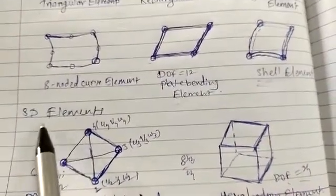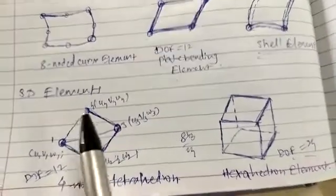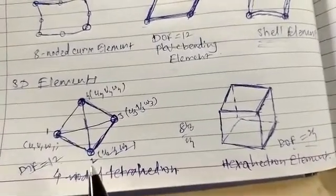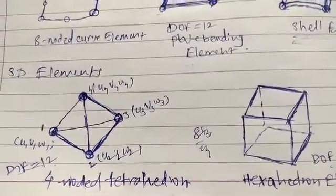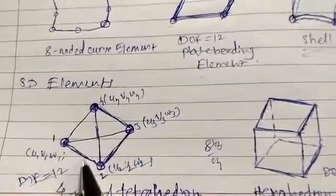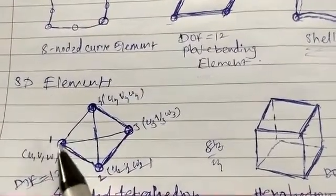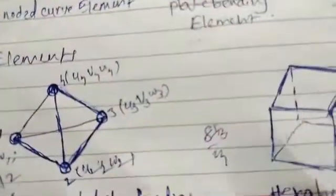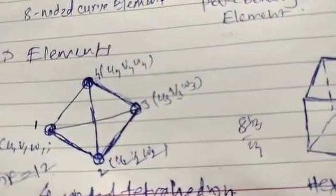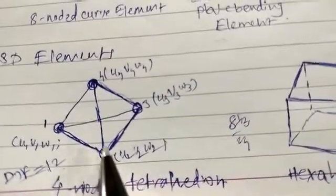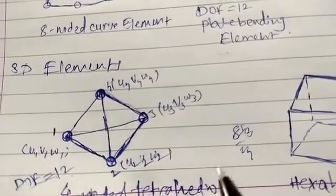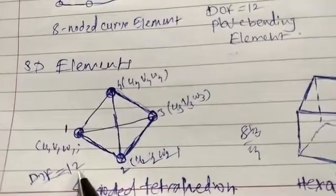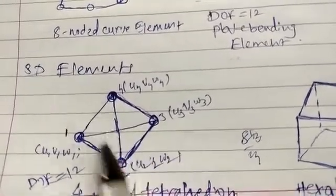The third type is three-dimensional elements. The first example is the four-noded tetrahedron. Since this is a 3D element, at every node we have three displacements. I have shown three displacements at every node: u1, v1, w1 at node 1; u2 likewise at node 2. It will have a degree of freedom equal to twelve because we have four nodes.